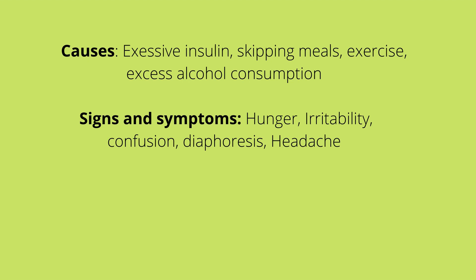Decreased level of consciousness can progress into a coma. Nursing care for a conscious patient with a blood glucose level under 70: give them 15 grams of readily absorbable carbohydrates, which can be half a cup of juice or soda, or an eight-ounce cup of milk. Recheck the glucose in 15 minutes. If it's still below 70, give them another 15 grams.